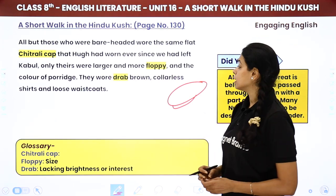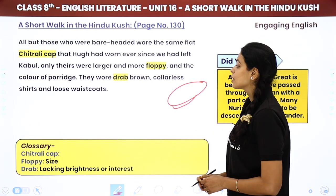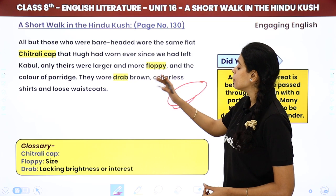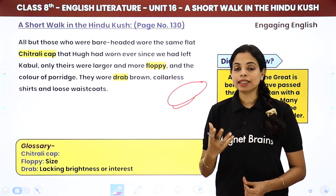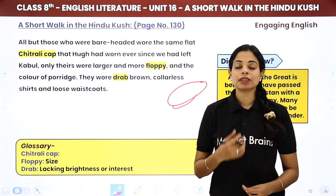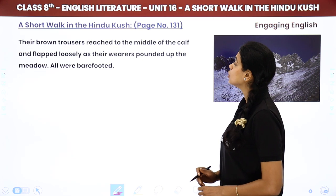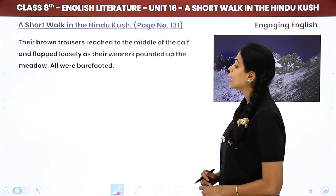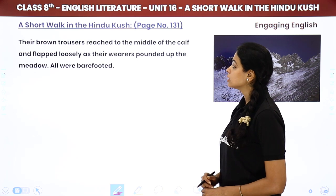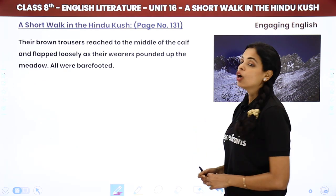The only difference was that the Nuristani caps were larger and more floppy — 'floppy' meaning very large in size — and the color of porridge, meaning a dull matte color. They wore drab brown, colorless shirts and loose waistcoats — basically they wore Pathani-style clothing. Their brown trousers reached to the middle of the calf and flapped loosely as their wearers ran up the meadow. All were barefooted.